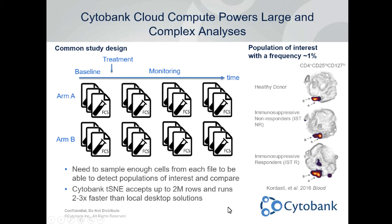In Cytobank, this allowed them to do this because Cytobank allows you to look at 2 million events together per run. Because it is in the cloud, the compute is going to be about two to three times faster than your local desktop solution. This is a cartoon of a common study design — you may have treatment group A and B collecting samples over time, amassing a lot of samples very quickly, and it's desirable to be able to analyze all of these data together.